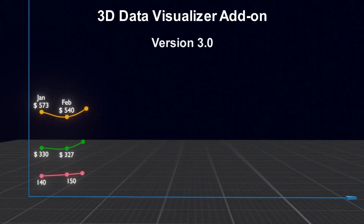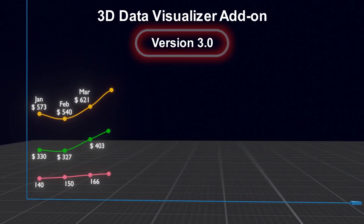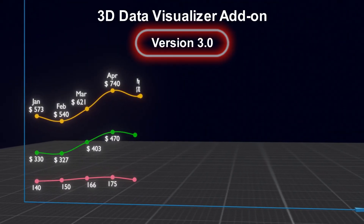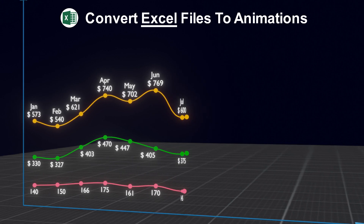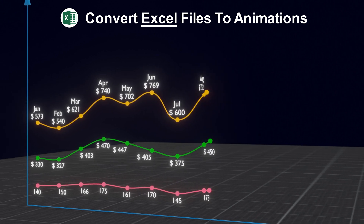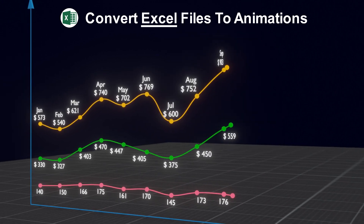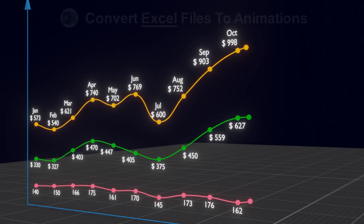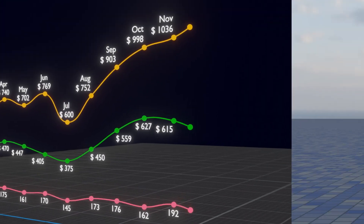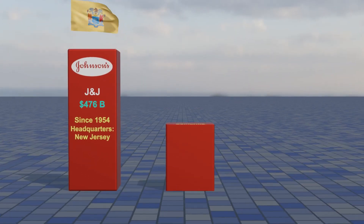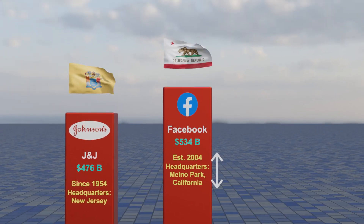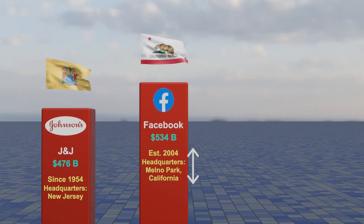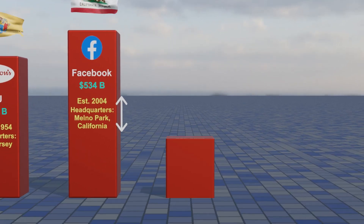We have now published version 3 of our 3D Data Visualizer add-on, that can easily convert an Excel file into a data comparison animation in just a few clicks. This version comes with a new design and some new features, as requested by many users.